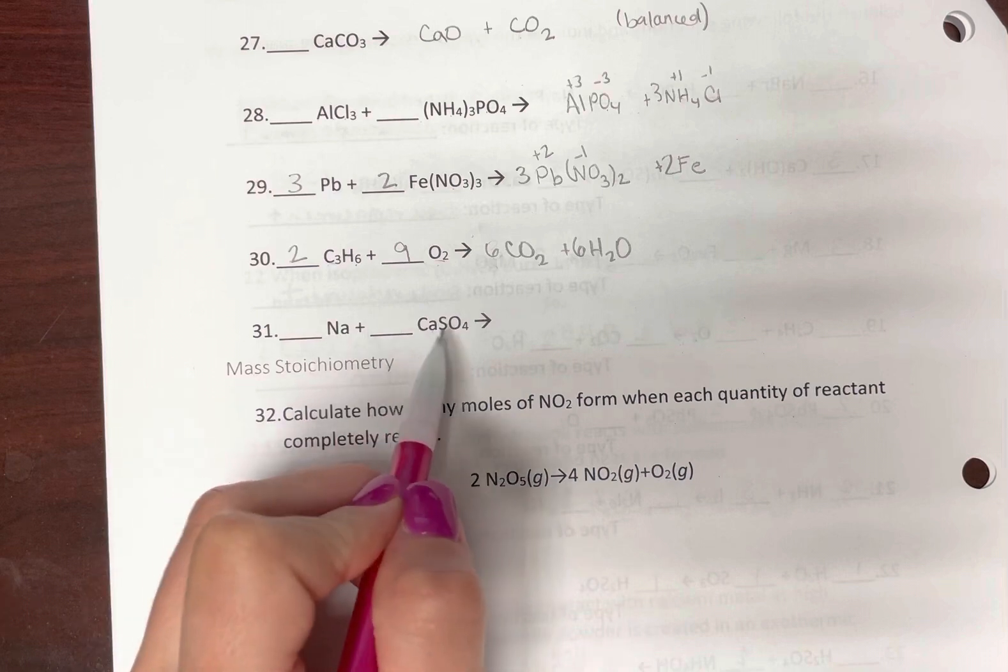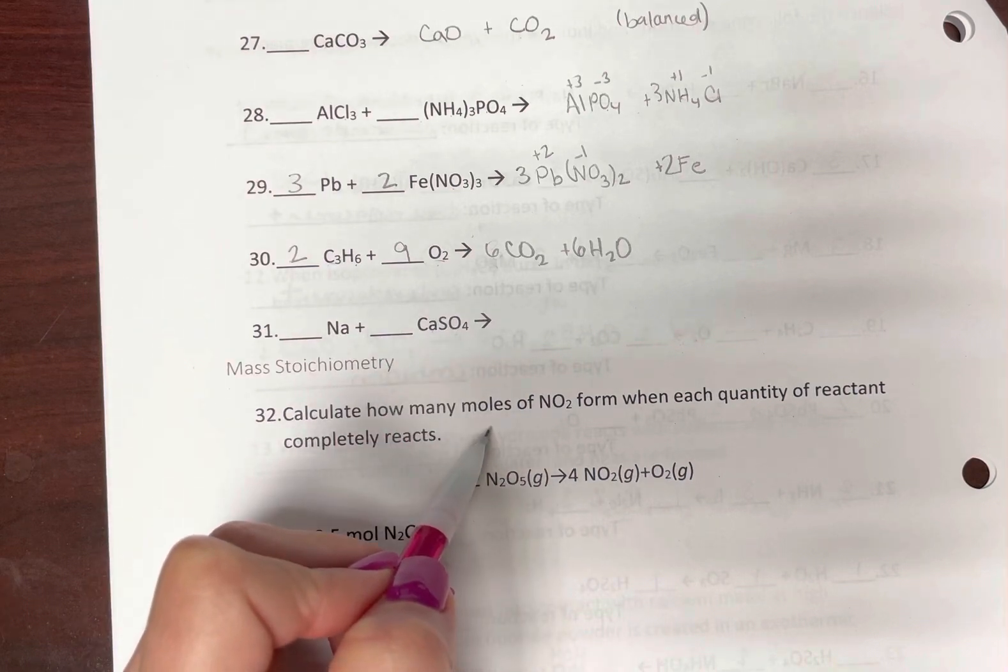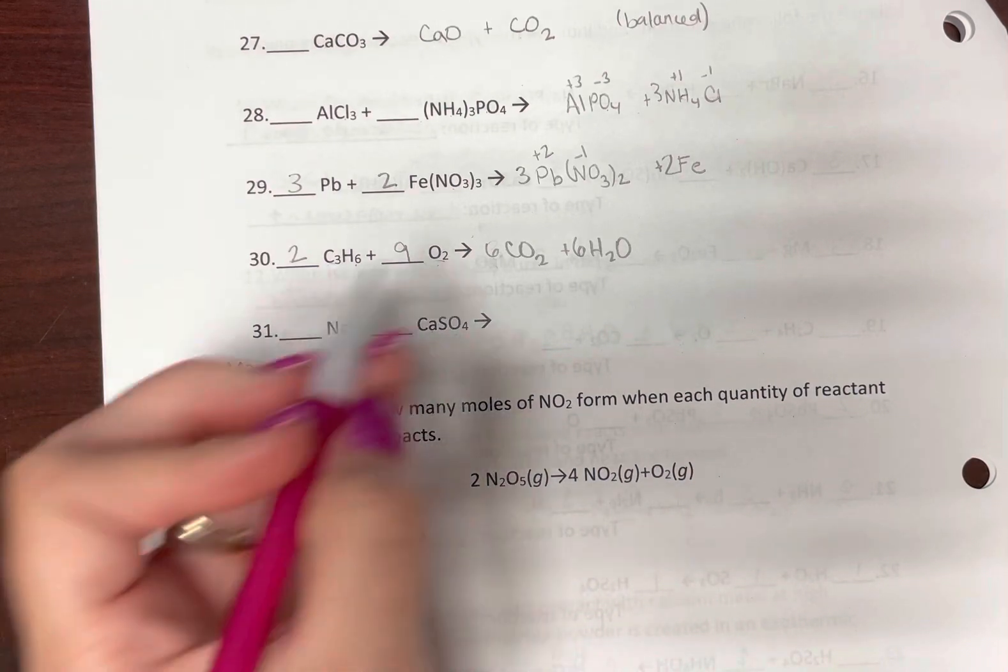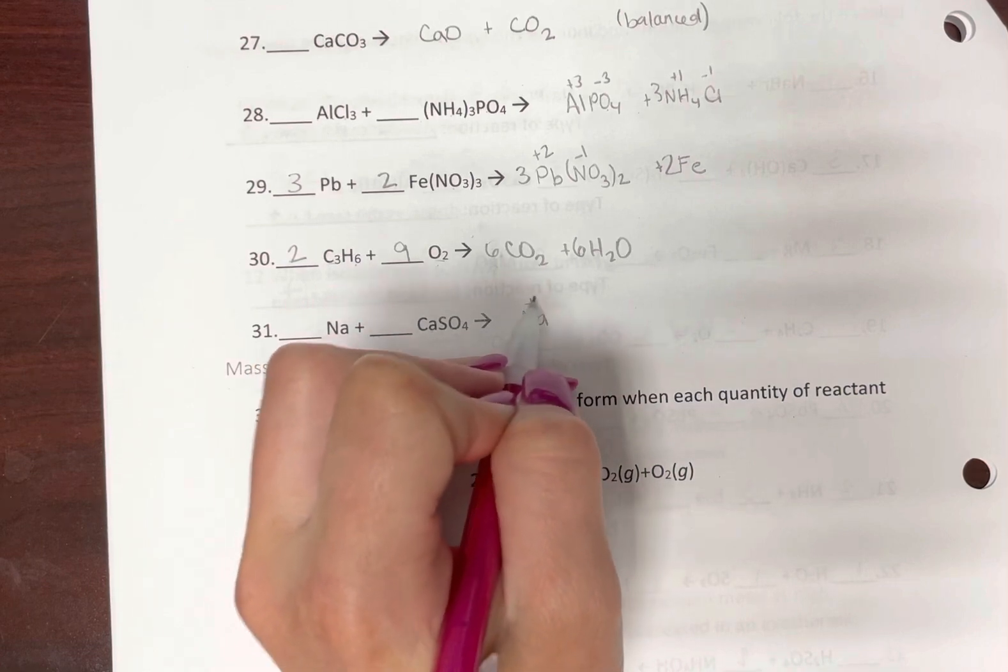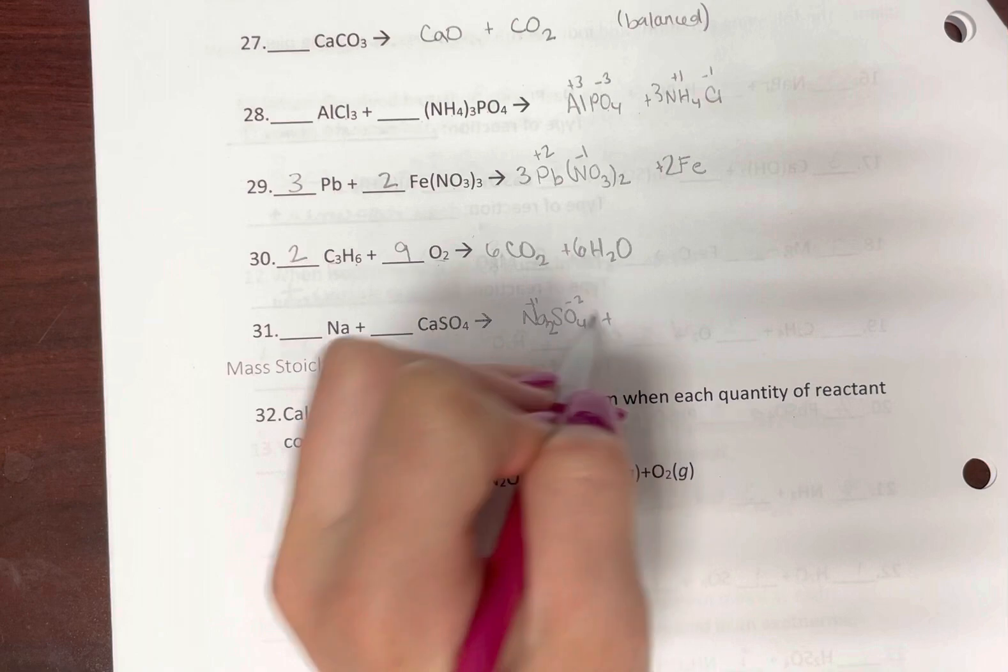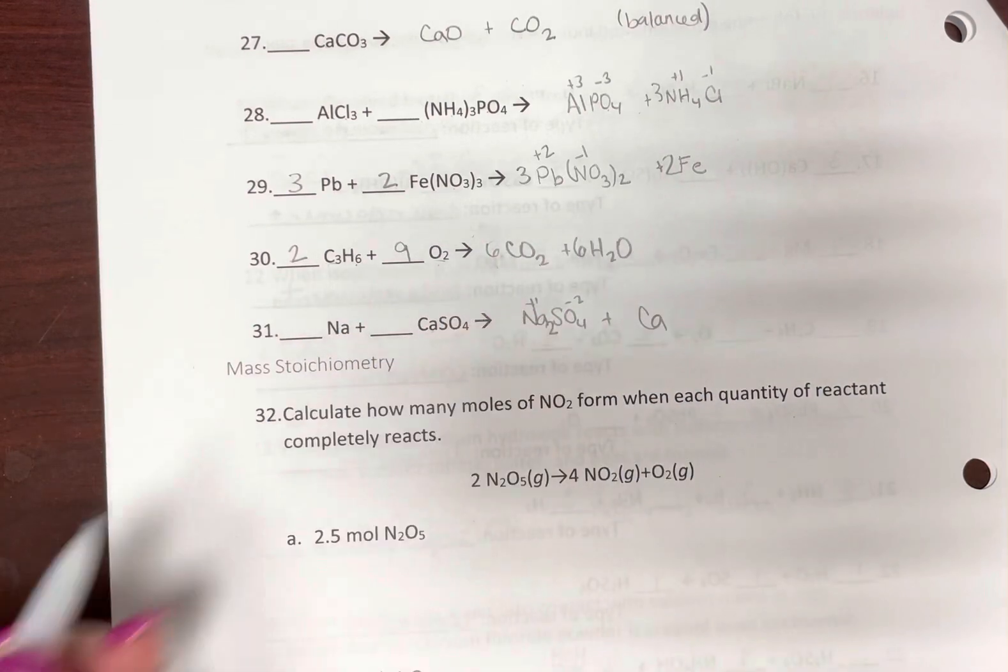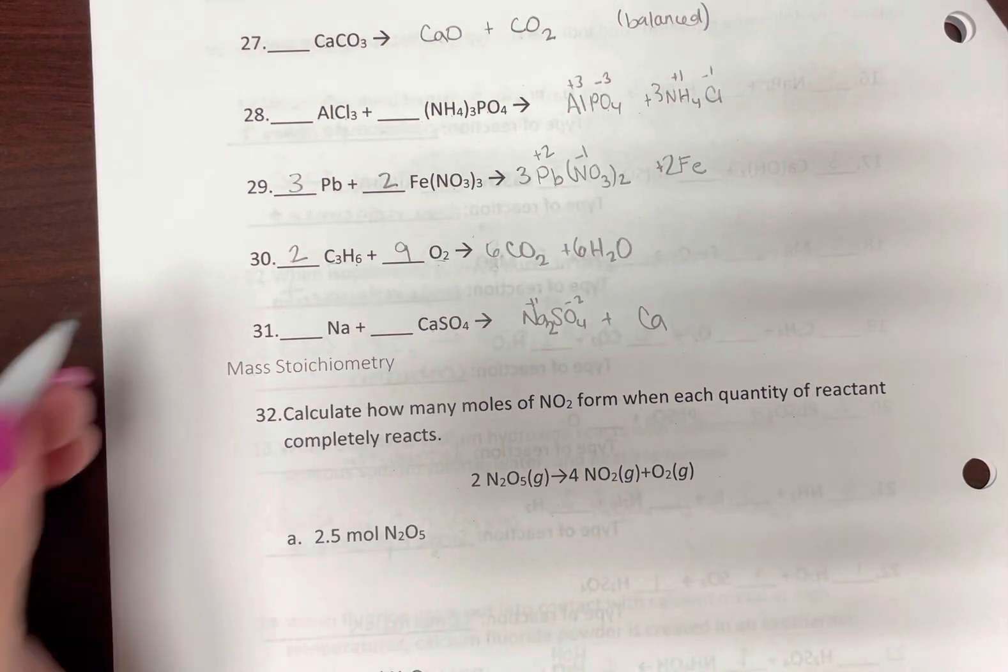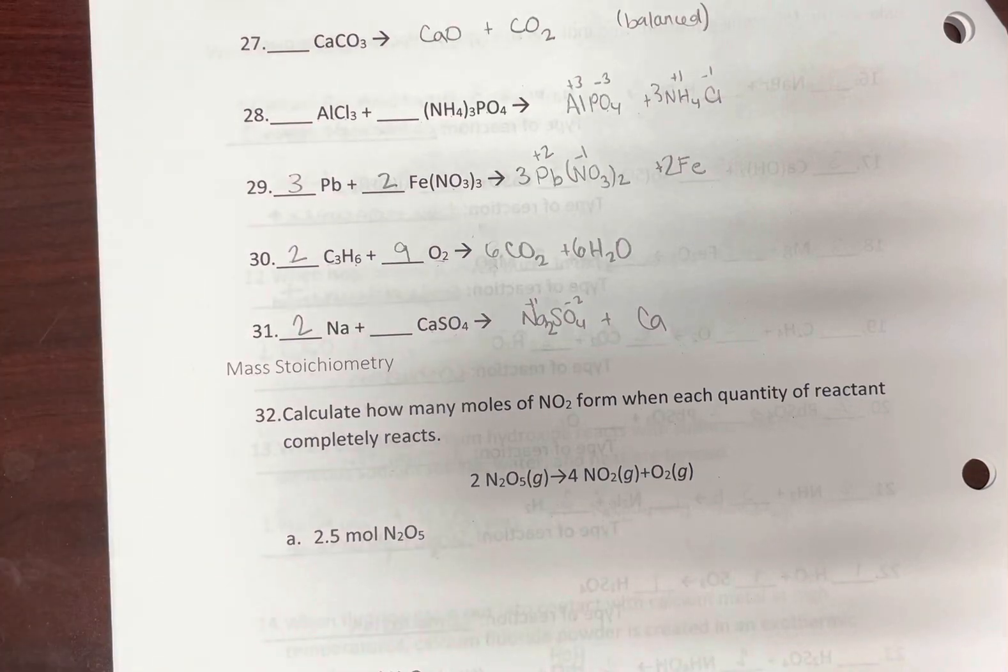Here we have two potential cations, only one anion, so let's just switch places. This is a single replacement. Four minus two, so we need two of those, and calcium can stay by itself. All I need are two sodiums.